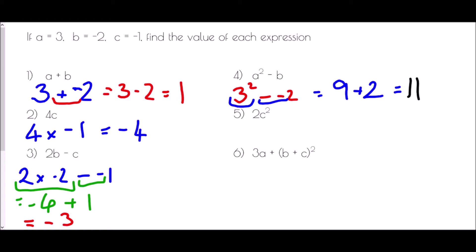For 2c squared, BIDMAS means we do 2 multiplied by c squared. C is a negative value, so it's helpful to place it in brackets: negative 1 squared. Squaring a negative means negative 1 times itself — a negative times a negative gives a positive. So 1 times 1 is 1, and 2 times 1 is 2.